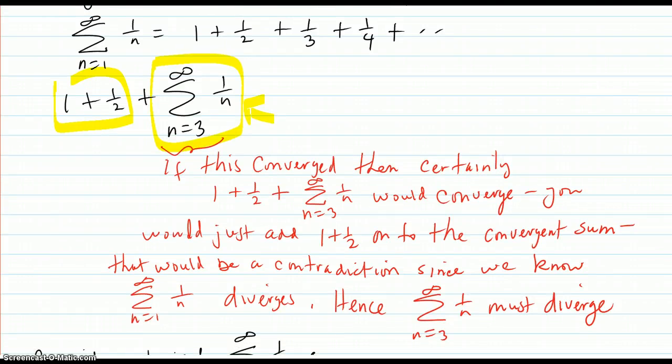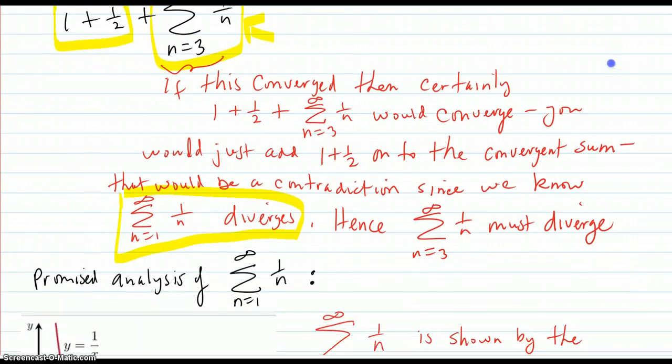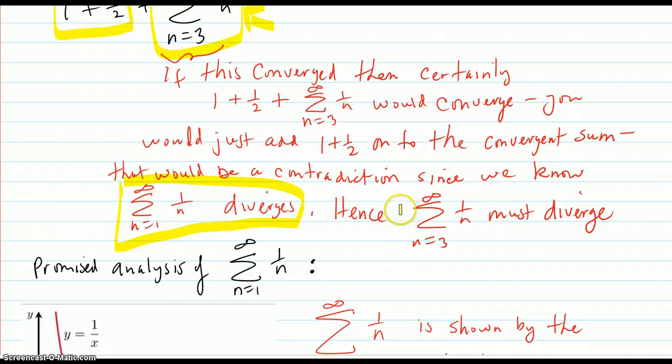But that would be a contradiction since we already know the total sum diverges. So this part here must diverge. In other words, if you take out some terms from a convergent series, it still converges. If you take out some terms from a divergent series, it still diverges.